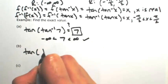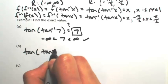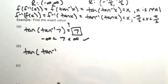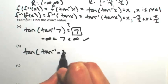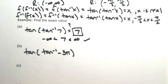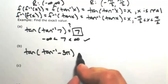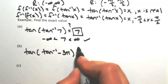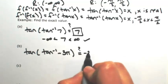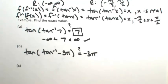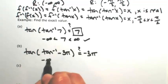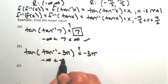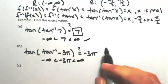Let's do another one: tangent of the inverse tangent of negative 3 pi. This should give us back negative 3 pi as long as it's in our restriction. The domain restriction of inverse tangent is all reals, which is certainly the case.